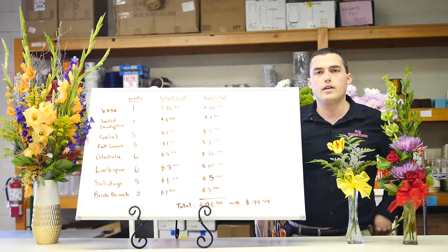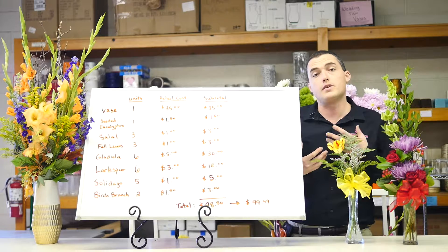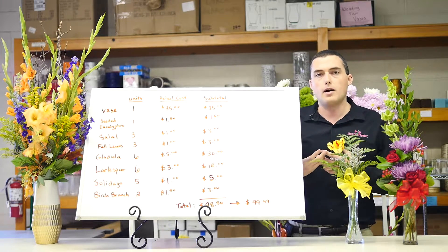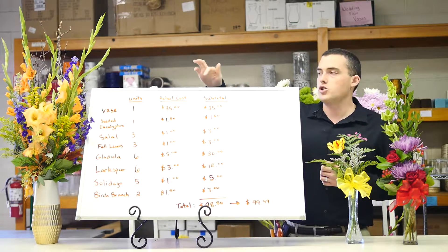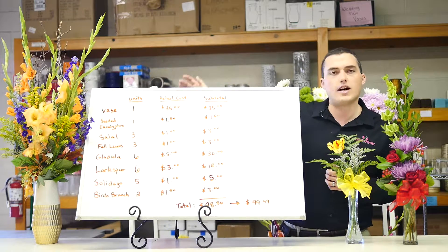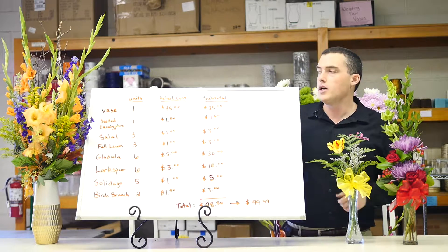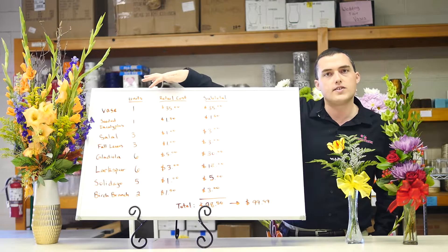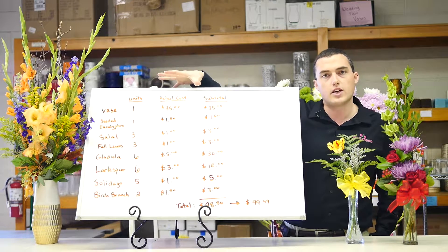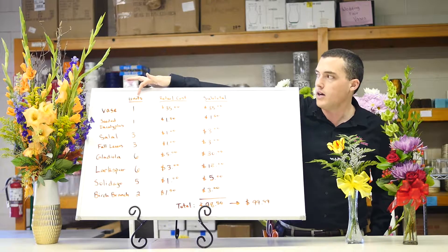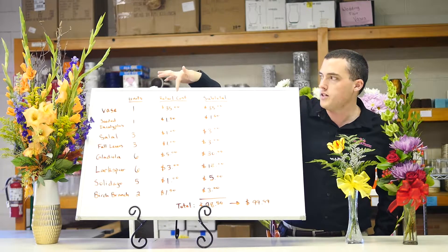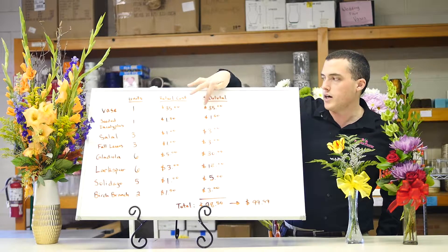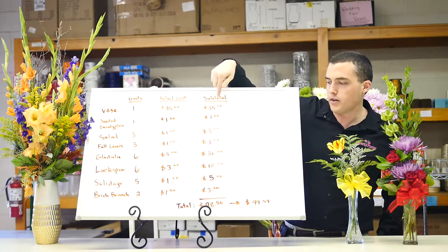Now, if you were in a situation where somebody actually gave you the numbers — which is pretty common if you're doing a competition — they'll actually tell you the retail cost, so you don't have to figure those things out. But you do still want to list it like this, because you can see it's really easy to tell what I'm doing with my math. I have a certain number of units, what their retail cost was, and then multiplied out subtotal all the way down.